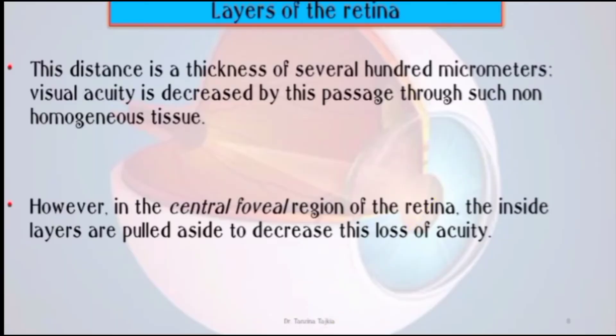The retina has a thickness of several hundred micrometers, and visual acuity is decreased as light passes through such non-homogeneous tissue. However, in the central fovea region of the retina, the inner layers are pulled aside to decrease this loss of acuity.